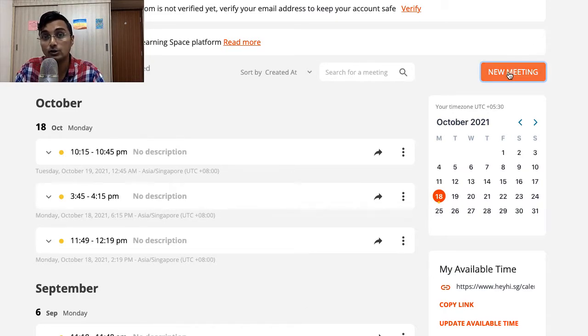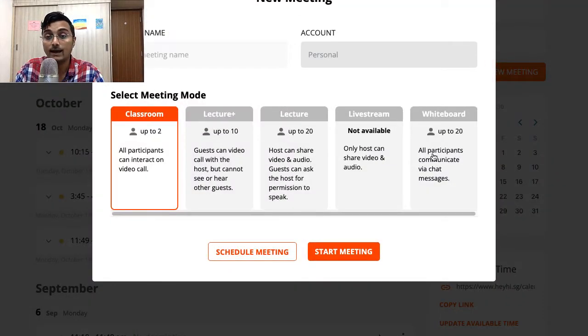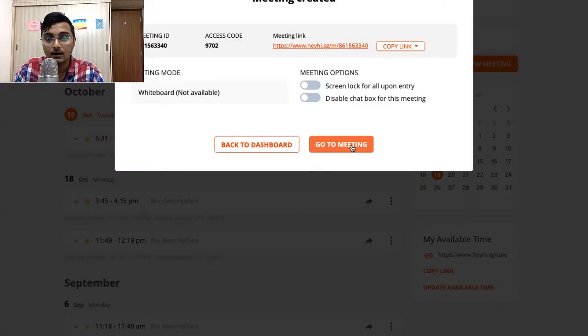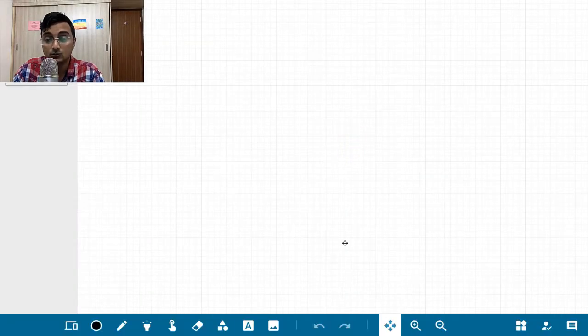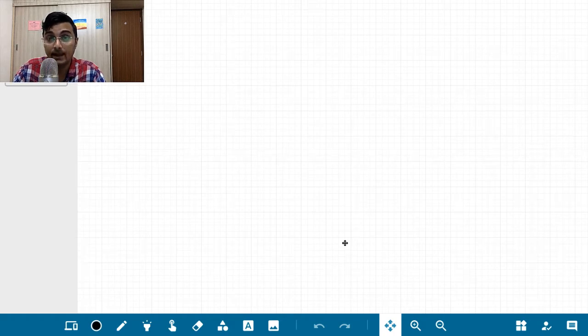To do that, first let's click on new meeting and select the whiteboard option. Now select go to meeting. So this opens up the HeyHi whiteboard.